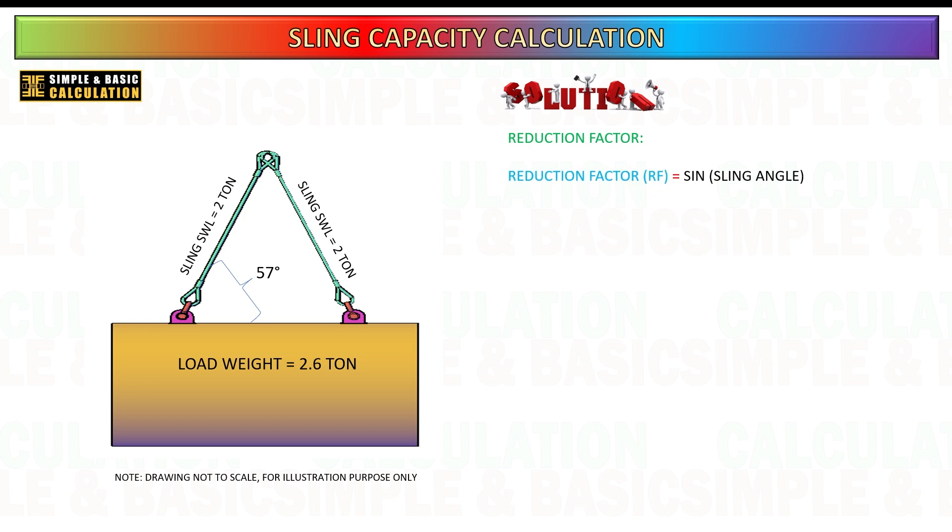Let us now proceed with the mathematical method for calculating the sling reduction factor, specifically using the sine function. This approach involves a few clear steps to determine the reduction factor and apply it to the sling's safe working load. Calculate the sine of the sling angle. To determine the reduction factor, you need to use the sine function of the sling angle. In this case, the sling angle is 57 degrees. Using a calculator, input the angle and select the sine function. Now you will get the sling reduction factor.